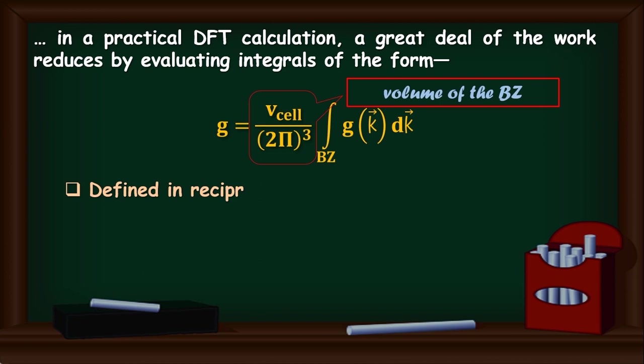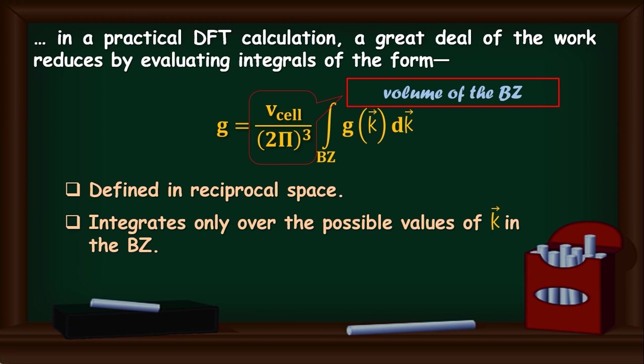You know, you surely have performed that square lattice in your graduation maybe. And all values of k are not allowed in a Brillouin zone. So, this integration is done only over the possible values of k. Okay. This is a very important point which you need to remember throughout this lecture and of course throughout your whole life as you are not going out from DFT as far as I guess.